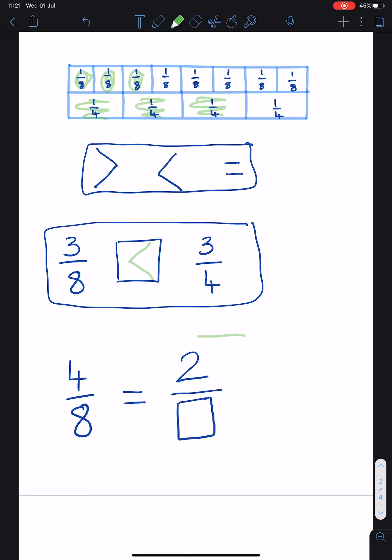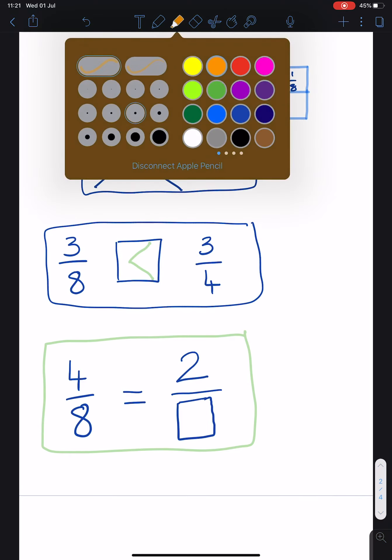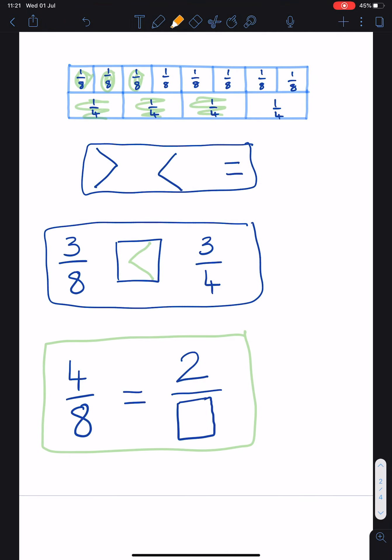Right. Let's look at this last problem on the page. Four over eight is equal to two over what? You need to fill in the missing denominator.